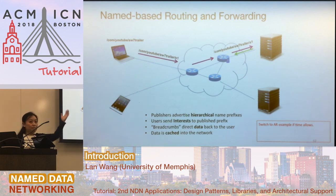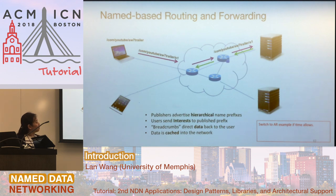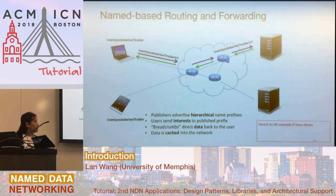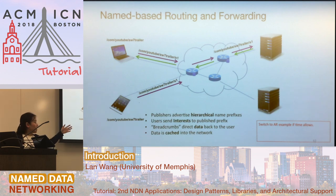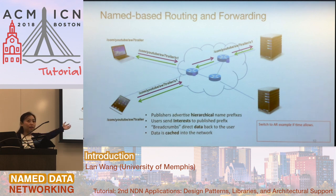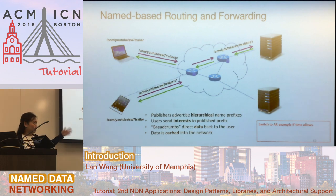The data comes back from the producer and is also cached in the routers. The data comes on the reverse path of the interest because there is already state established in the network to forward the data back — that's called stateful forwarding. If somebody else wants to retrieve the same data, it's already cached upstream and can be directly retrieved. This is opportunistic caching in the network, helping multiple consumers retrieve the same content — we can also call it asynchronous multicast.